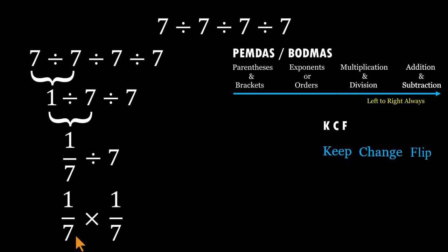Now multiply straight across. 1 times 1 equals 1. 7 times 7 equals 49.